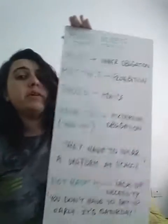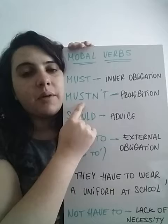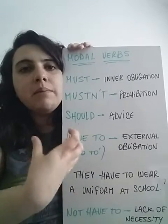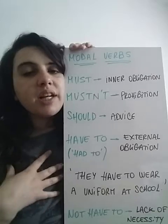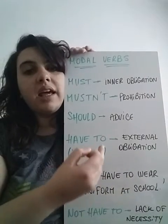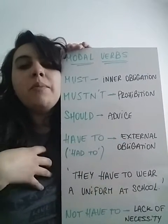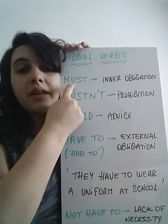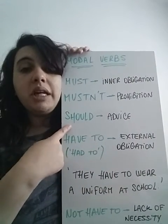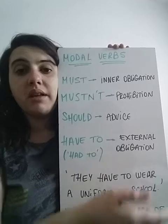Other modal verbs we have already seen — like 'must' and 'mustn't.' Remember? We're going to use 'must' to talk about internal obligation — something that is important to me, something the person speaking imposes on themselves. It has to be something of personal importance. That's why we call it internal obligation. 'Mustn't,' remember, was used to talk about prohibition. And 'should' was used to give advice — to say something is a good idea. And to say something is not a good idea, we used 'shouldn't.'